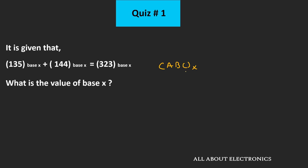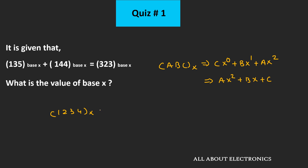If we want to represent this number into the decimal, this is the decimal equivalent of this number. Or let's say we have some unknown number 1234 in some X number system, then in the decimal, it can be represented as x³ plus 2x² plus 3x plus 4.